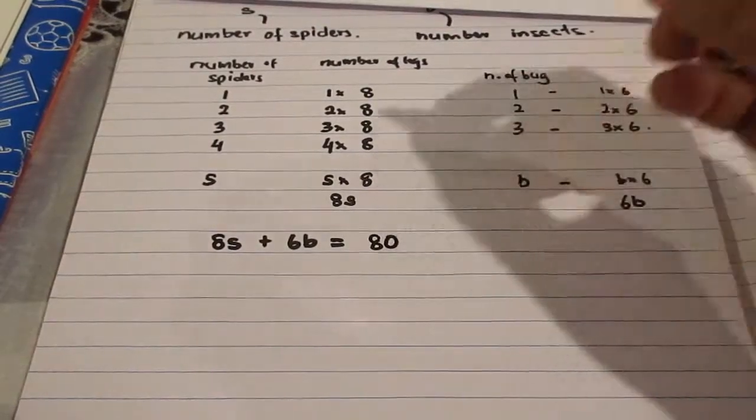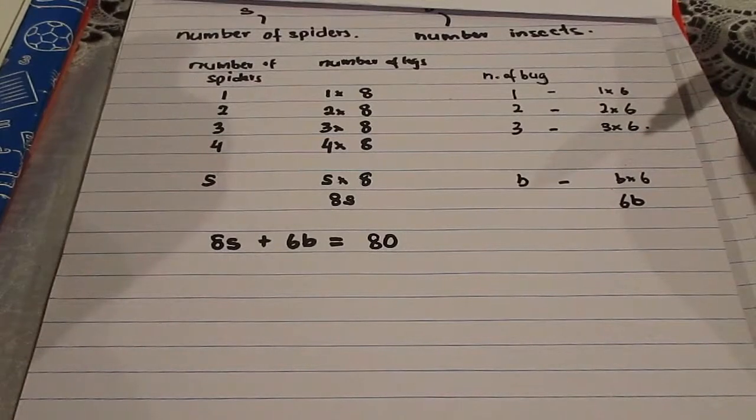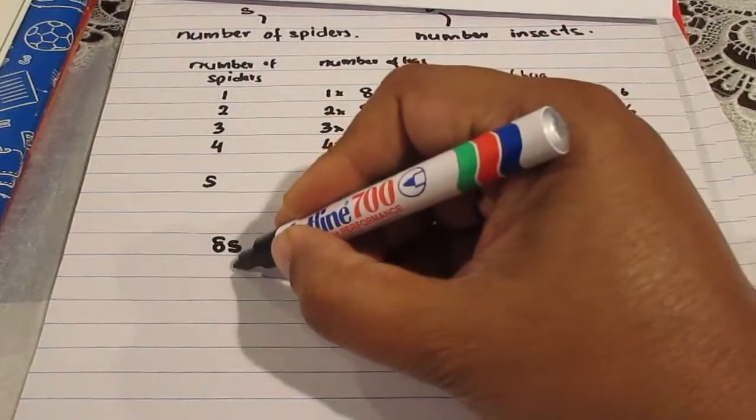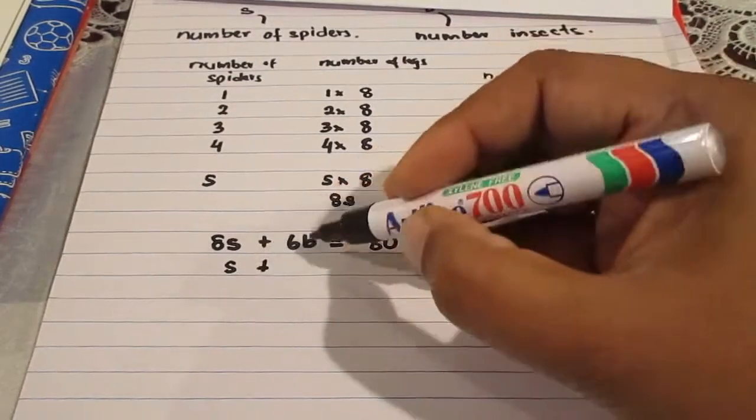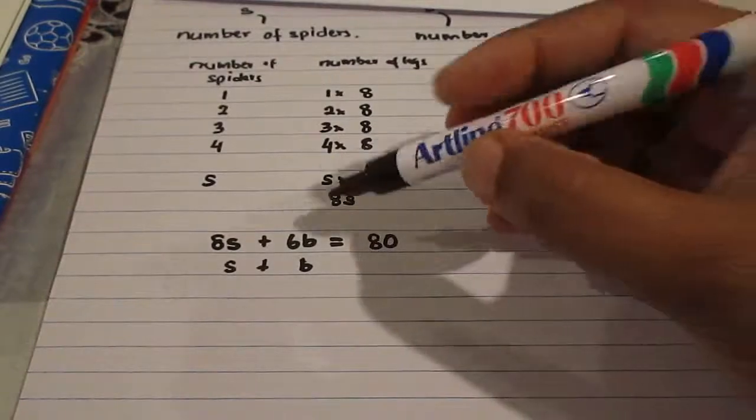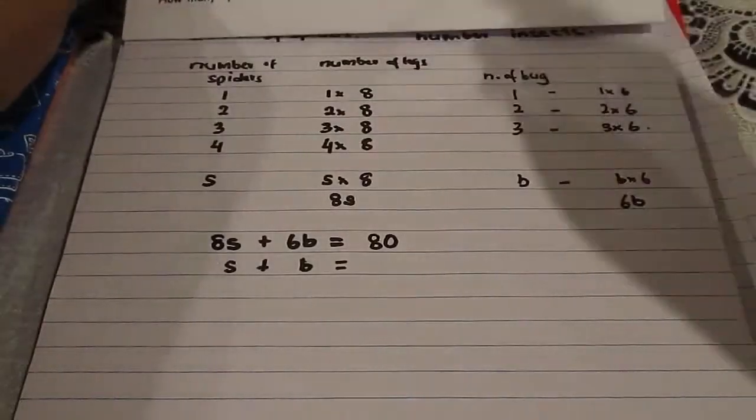Okay, now one bug has one head, one spider has one head. So s spiders have s heads and b bugs have b heads. So s heads and b heads, total number of heads is 11.